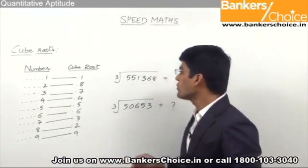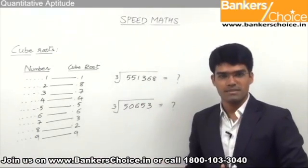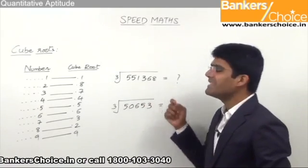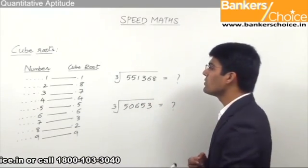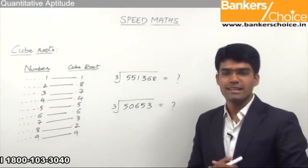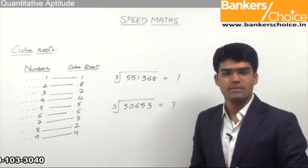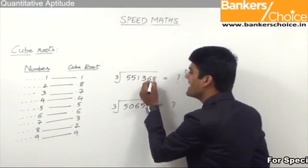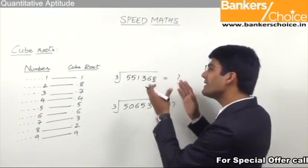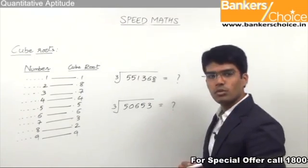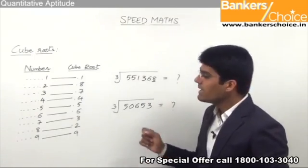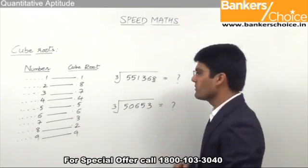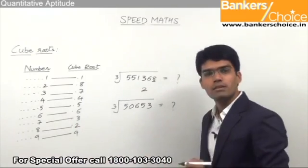Let us see how to find the cube root of 551368. The first step is to check the unit digit. The number is ending in 8, and assuming this is a perfect cube, if the number ends in 8, its cube root should end with 2 from the given pattern. So very clearly, the answer will be ending with 2.